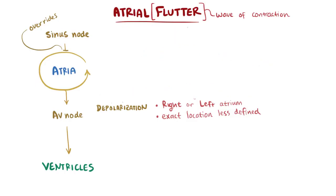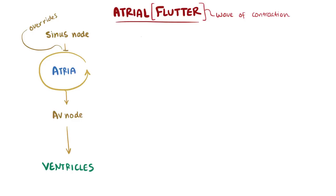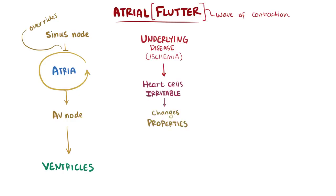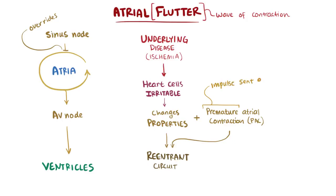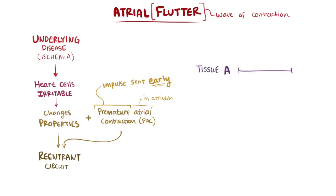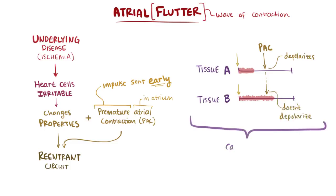Since everyone has a cavotricuspid isthmus but not everyone has atrial flutter, there must be something else at play that causes a reentrant circuit. In most cases there's some underlying disease, like ischemia, that makes the heart cells more irritable, which can change some of their properties like the refractory period, making it more likely that reentrant circuits develop. In addition, usually the circuit is initiated by a premature atrial contraction, or PAC, which is an electrical impulse that's sent out early in the atrium before you'd normally expect one. The exact cause of PACs generally isn't known, and they can even happen in otherwise healthy people. So if tissue A has a short refractory period and tissue B has a longer refractory period, and a PAC is timed just right, one tissue might depolarize and one might not, and this can propagate an abnormal wave of depolarization which can go through the atria and initiate a reentrant circuit.